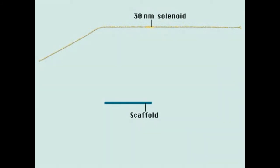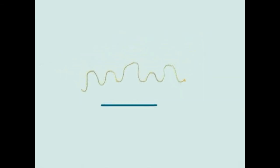The solenoid coil is packed further by arranging in loops. The loops attach to a protein scaffold.